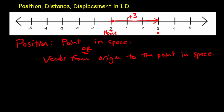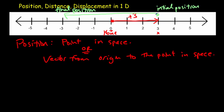To talk about displacement, we need two positions in space: an initial position and a final position. Say we were at school, three kilometers to the right of our home, and we traveled to the post office — that's our final position. The displacement is the vector from the initial to the final position, in this case negative six: negative because the vector points left, and six because the length is six units from plus three to minus three.